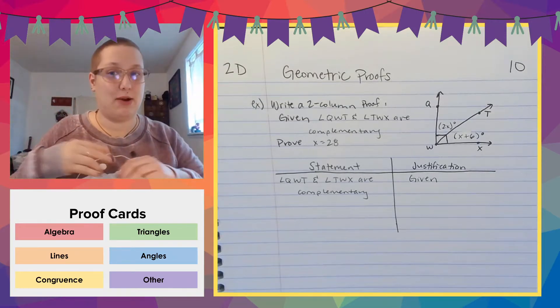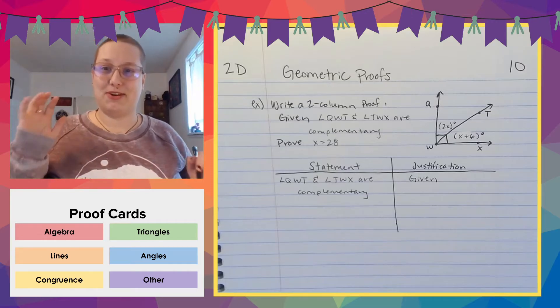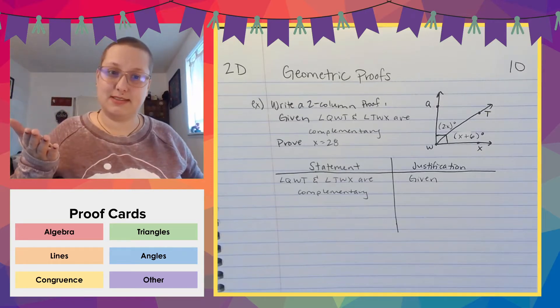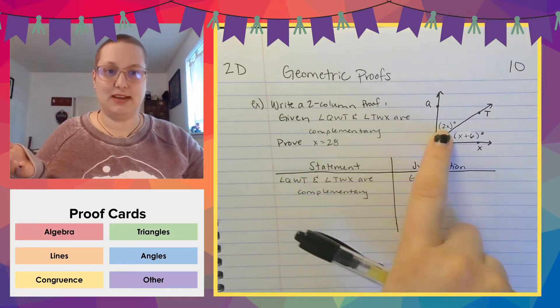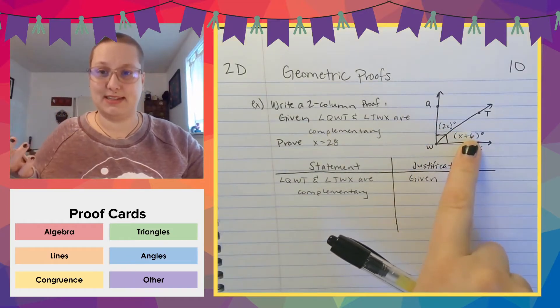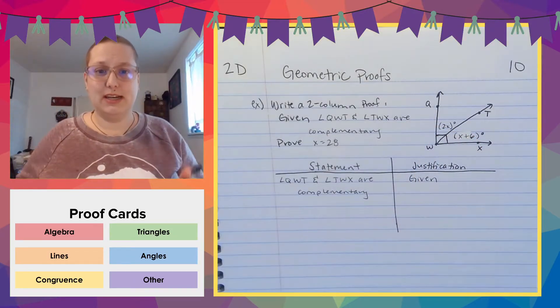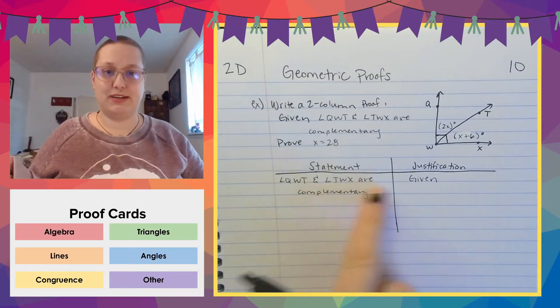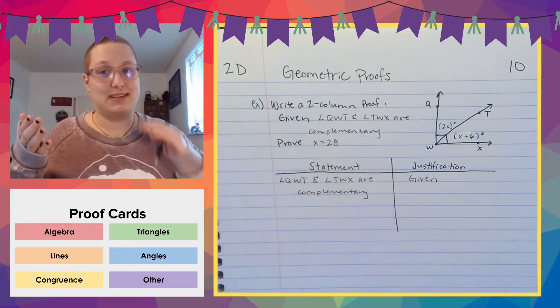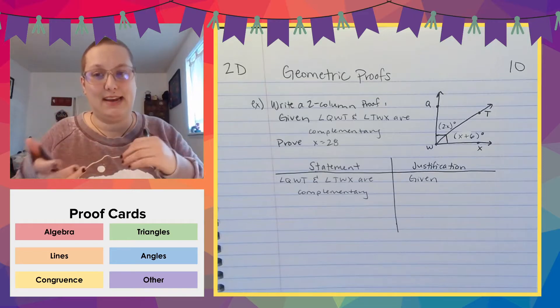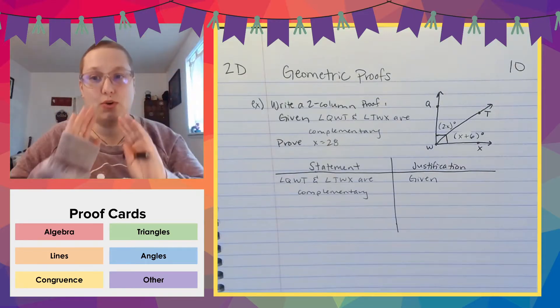So you have two options right now and they're both correct. You can either list out all of the given things. So this is given also, this is given that it's equal to 2X and this is given equal to X plus 6, or you can follow this train of thought that complementary means adds up to 90 and then add in the new information as you need it. It's your call.